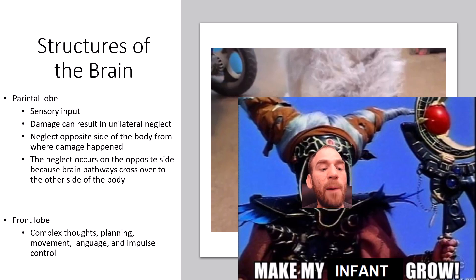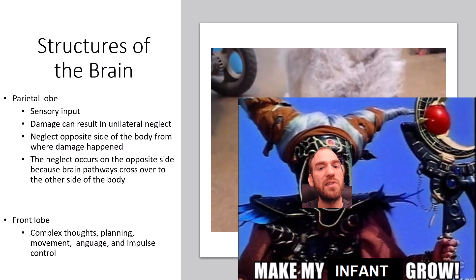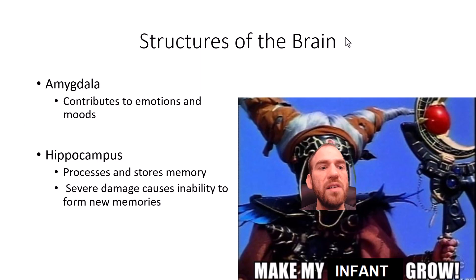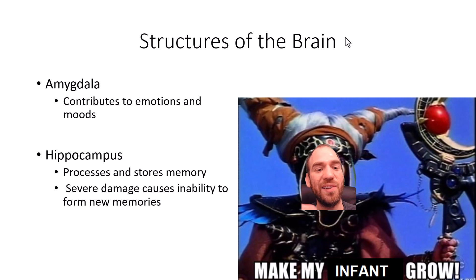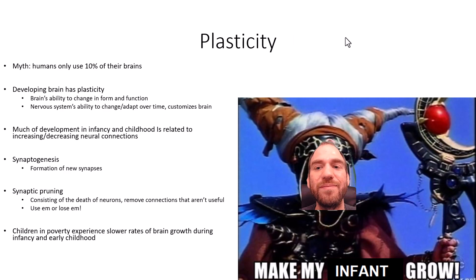The frontal lobe handles complex thoughts, planning, movement, language, and impulse control — broadly what it means to be human. The amygdala contributes to emotions and moods. The hippocampus processes and stores memory; severe damage causes the inability to form new memories. These are all very broad overviews — each region does far more complex things than this summary suggests.